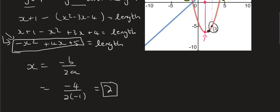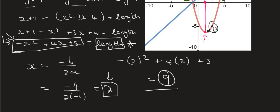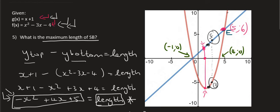Or you could just plug that 2 into this equation over here because this equation over here gives you the length already. So I'm going to plug 2 into that and that's going to give us a total length of 9. So the maximum length that you would ever get between those two graphs is 9. And that will happen when x is 2.